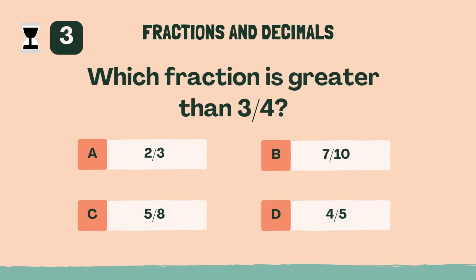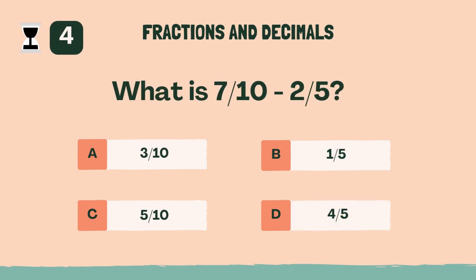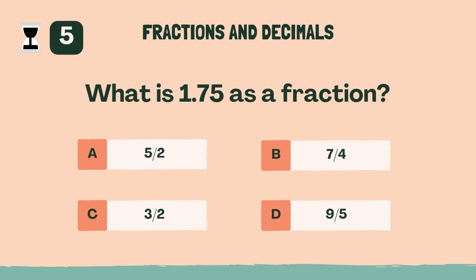Which fraction is greater than three-quarters? D, four-fifths. What is seven-tenths minus two-fifths? A, three-tenths. What is 1.75 as a fraction? B, seven-fourths.